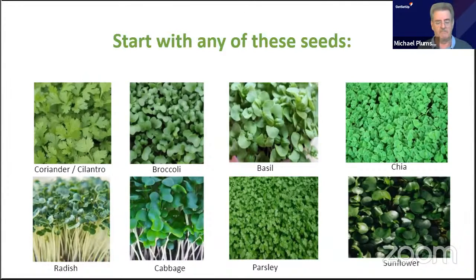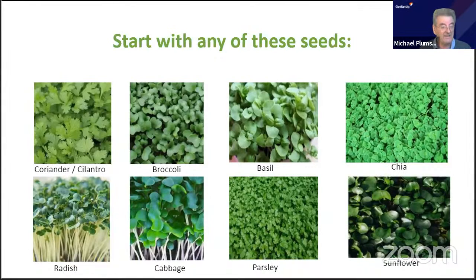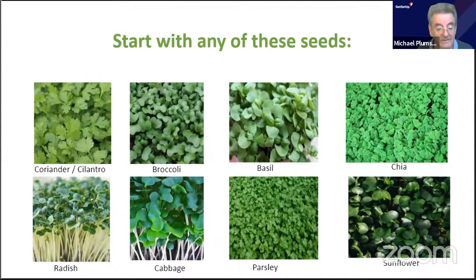Take coriander for example — it's a high source of fiber, and it's also got manganese, iron, and magnesium. The leaves are rich in vitamin C and vitamin K. And what else? Protein too!